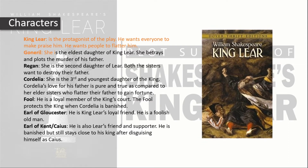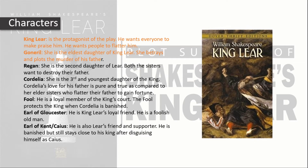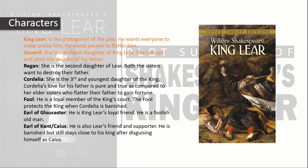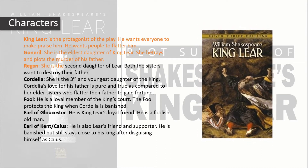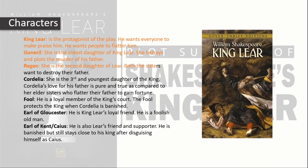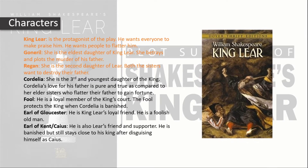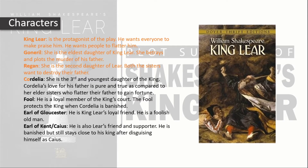Goneril is the eldest daughter of King Lear. She betrays and plots the murder of her father. Regan is the second daughter of Lear. Both sisters want to destroy their father.